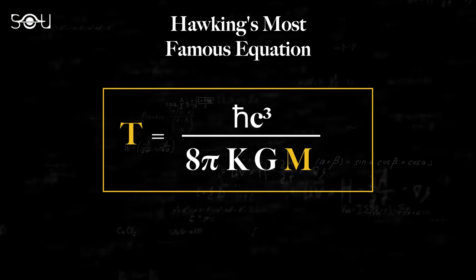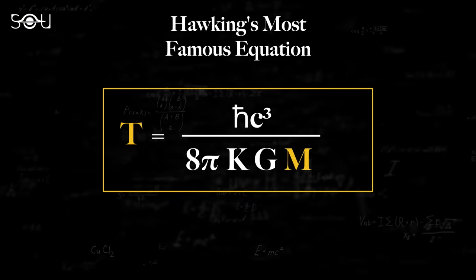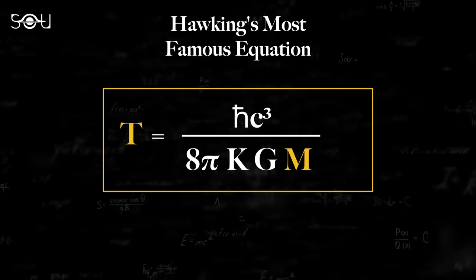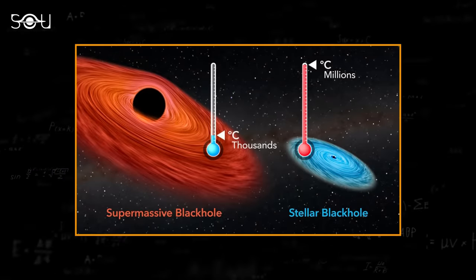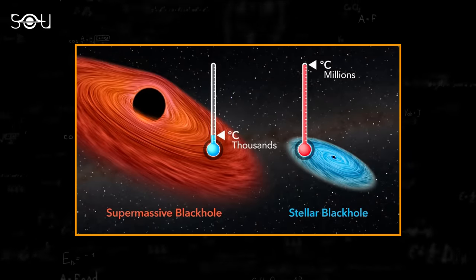This is important because it means that the temperature of the radiation is inversely related to the mass of the black body. So the larger a black hole, the lesser its temperature, and the longer it will take to evaporate.